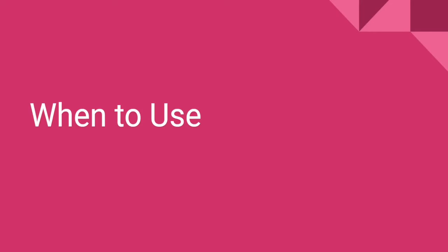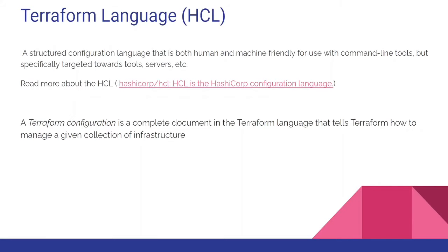When to use Terraform: when you want something on a disposable basis or you want multiple copies of a similar environment, you should go with infrastructure as code. Terraform uses HCL - a structured configuration language that is both human and machine friendly, specifically targeted towards provisioning servers and used with command line tools. A Terraform configuration is a complete document that tells Terraform how to manage a given collection of infrastructure.